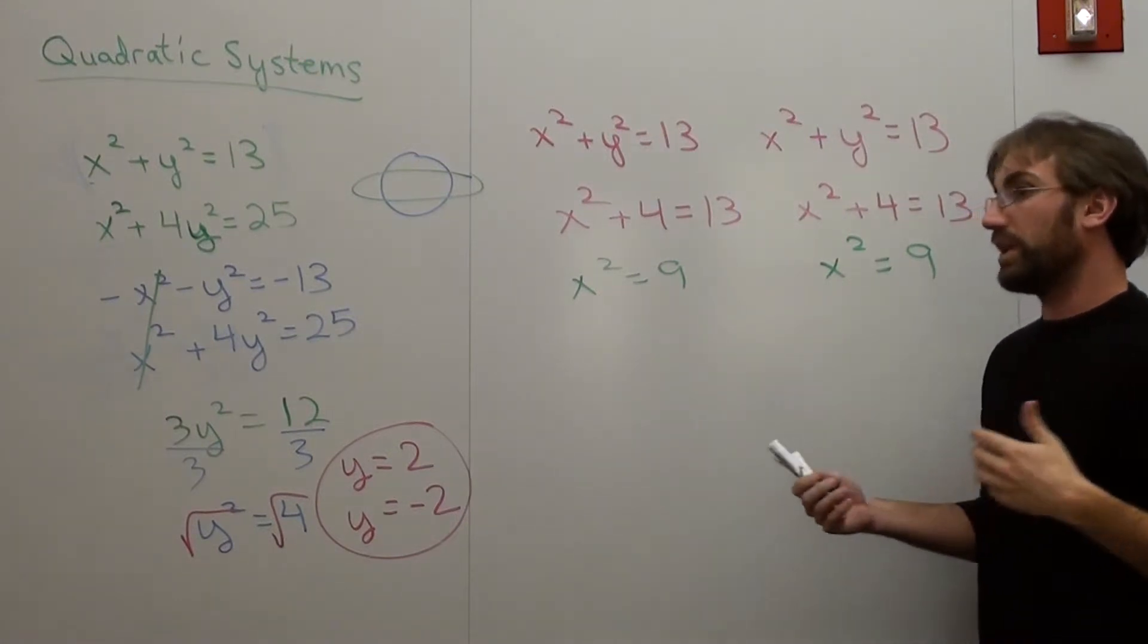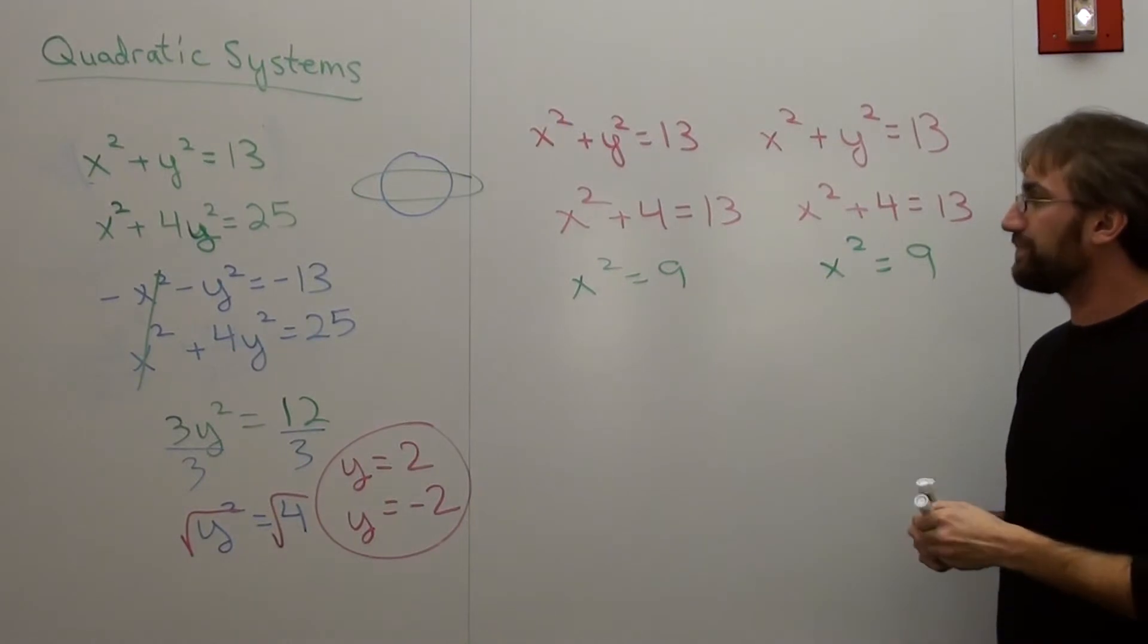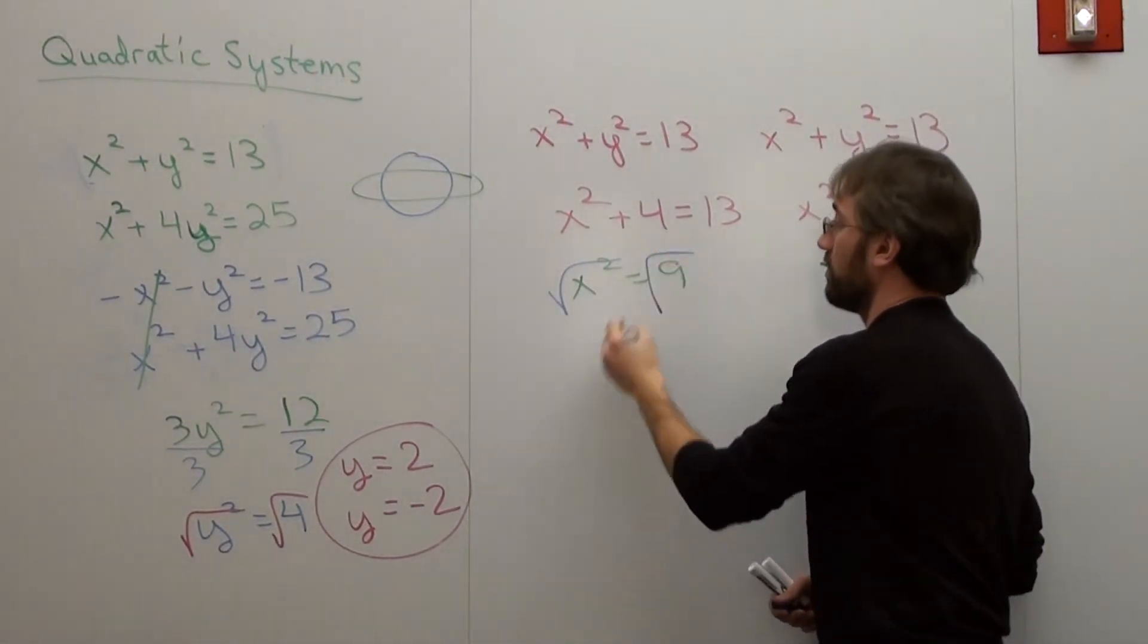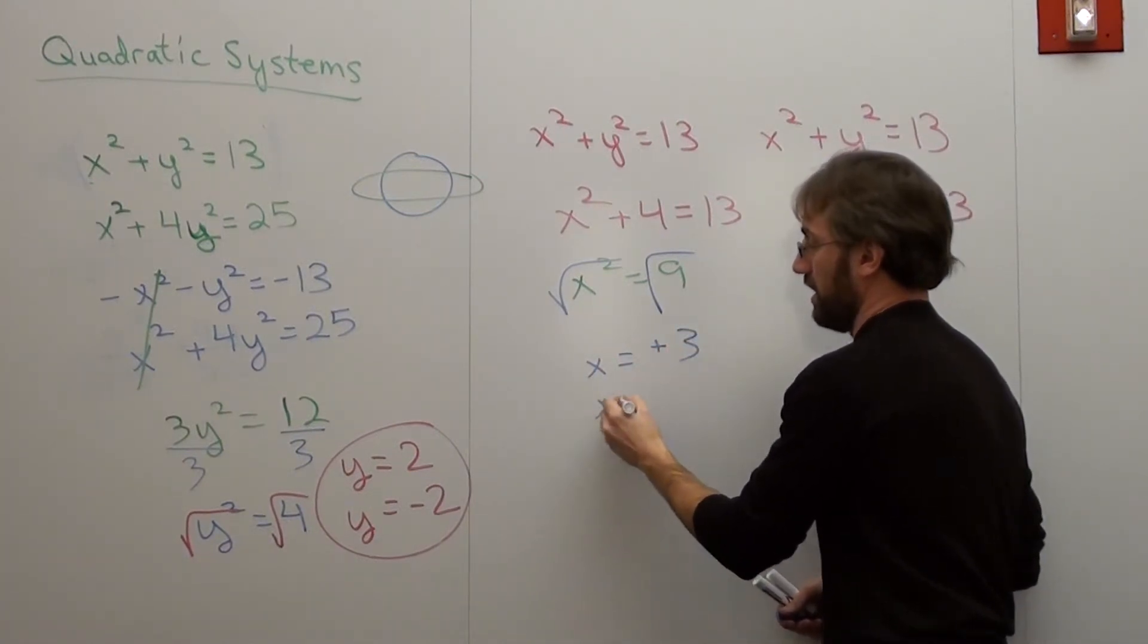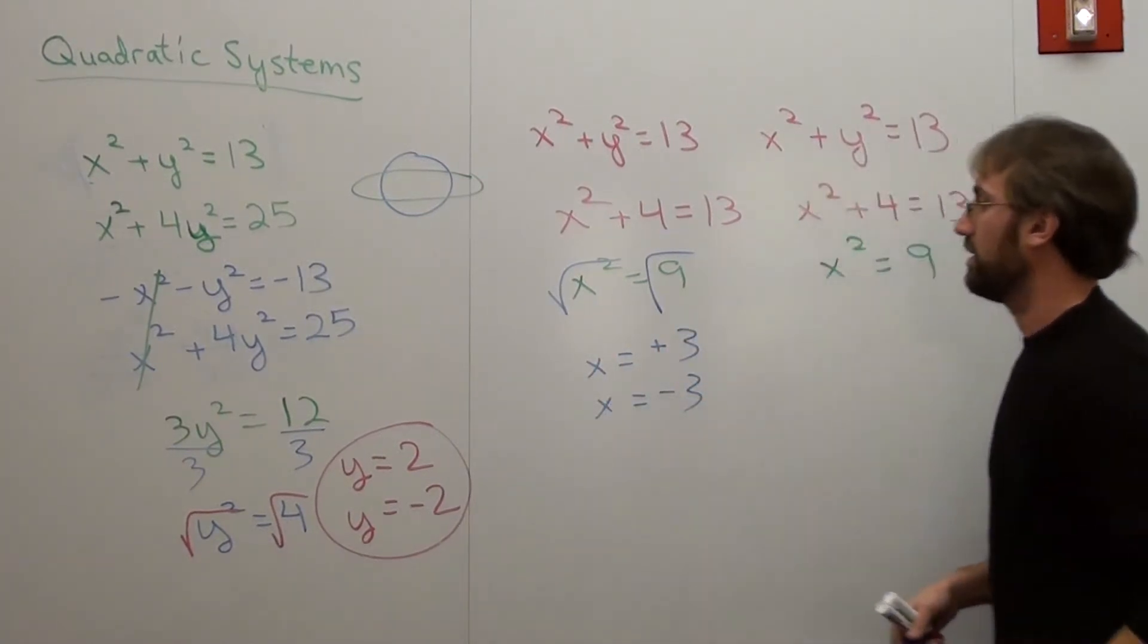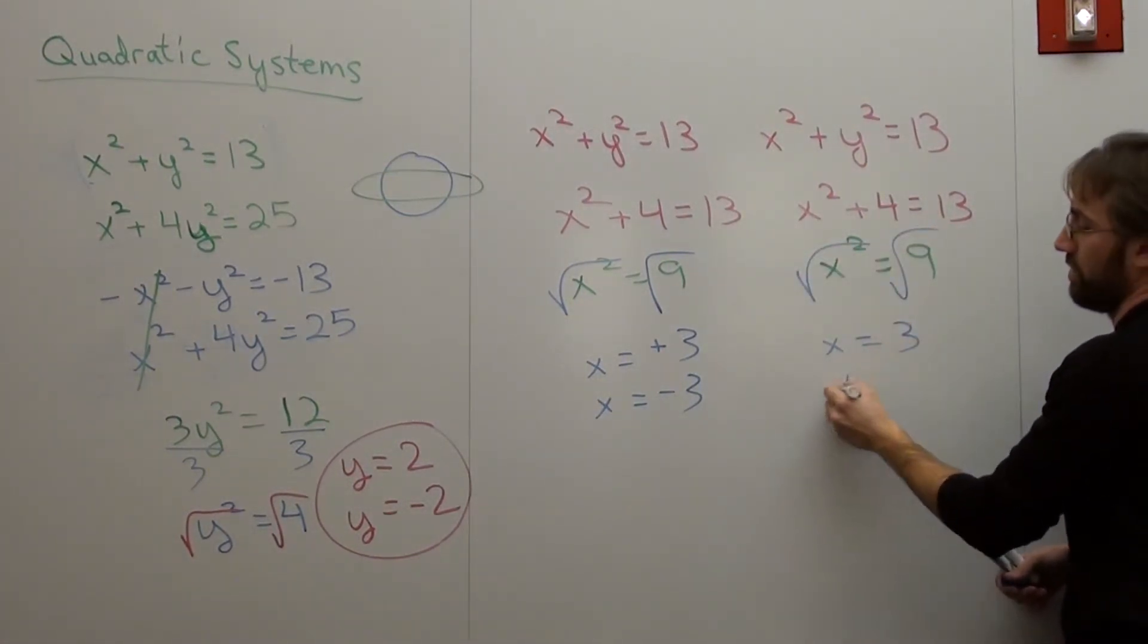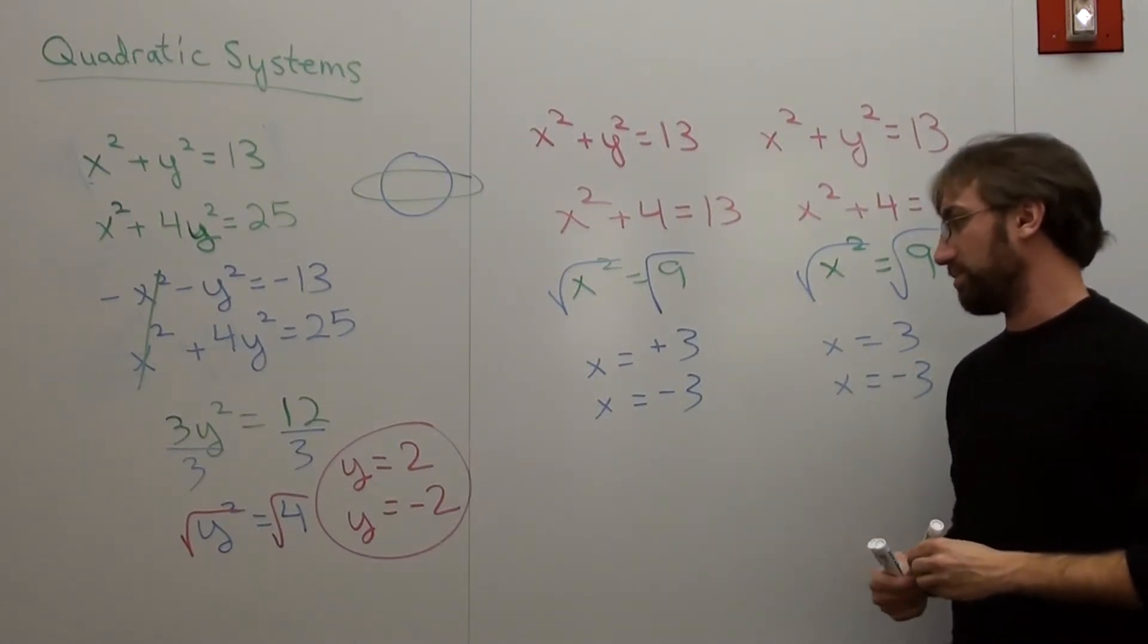Okie dokie. It's whatever. Not too big of a deal yet. So take the square root of both sides. x equals plus 3. x equals negative 3. In this one, x equals 3. x equals negative 3. There are four possible solutions that I can pick.